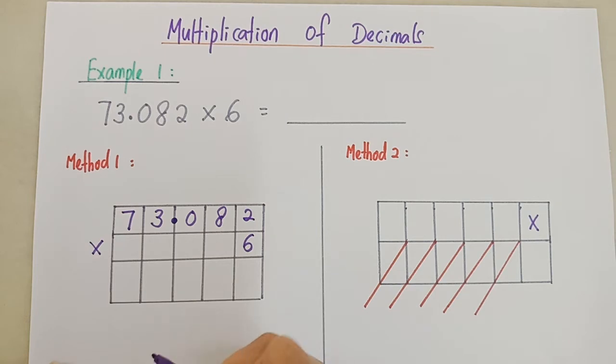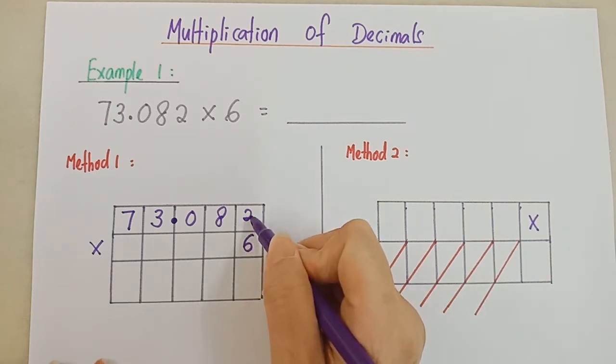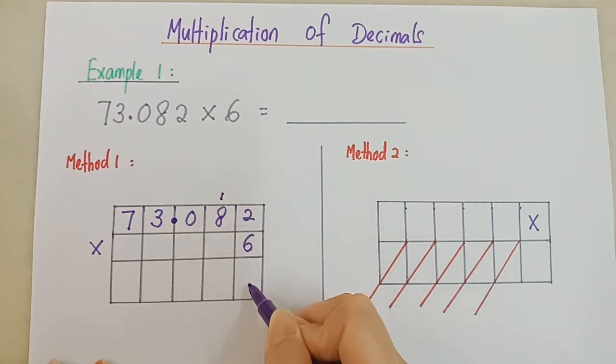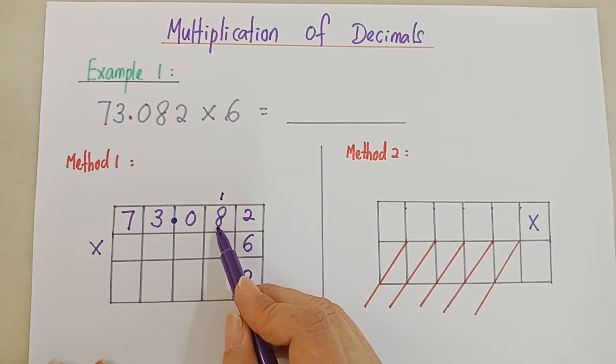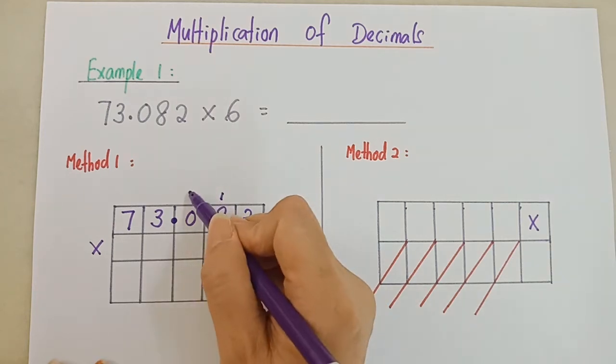Look at your multiplication table of 6. 6 times 2 is 12, so you write 1, 2. 6 times 8 is 48, plus 1 is 49.